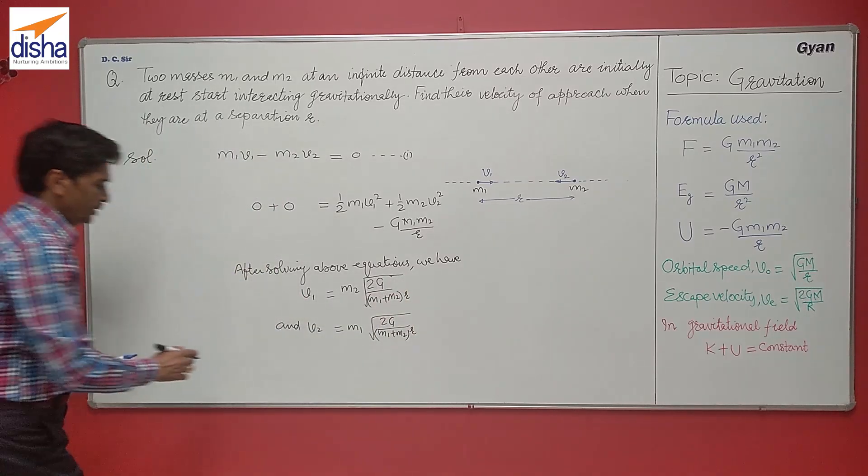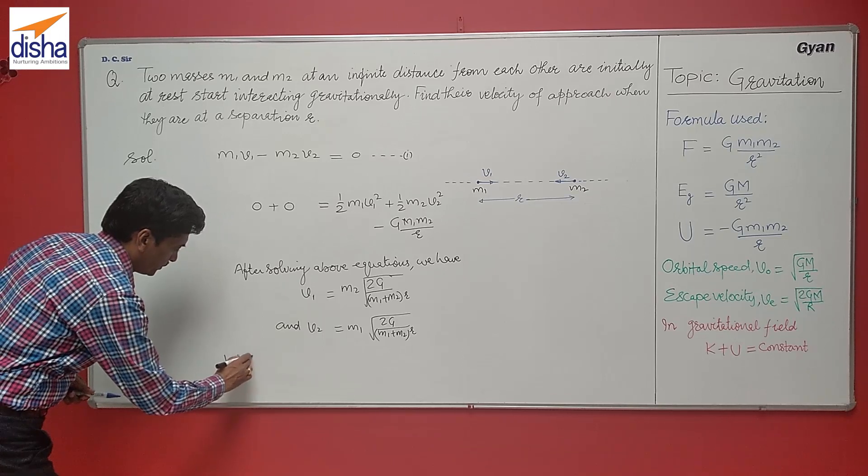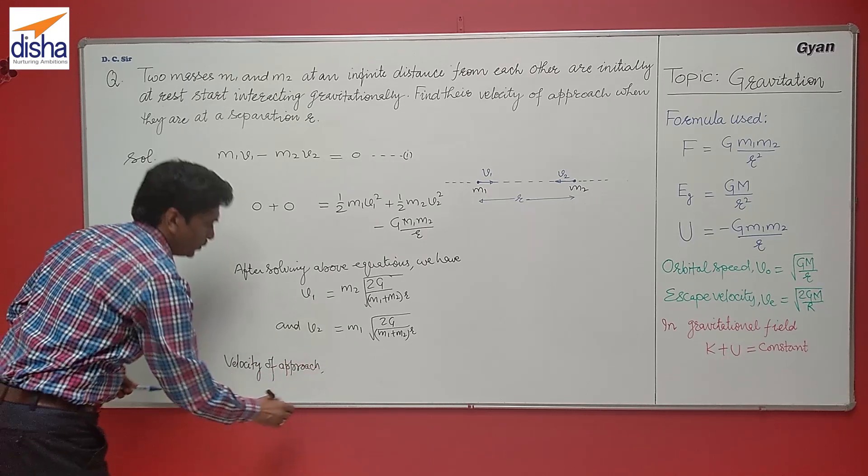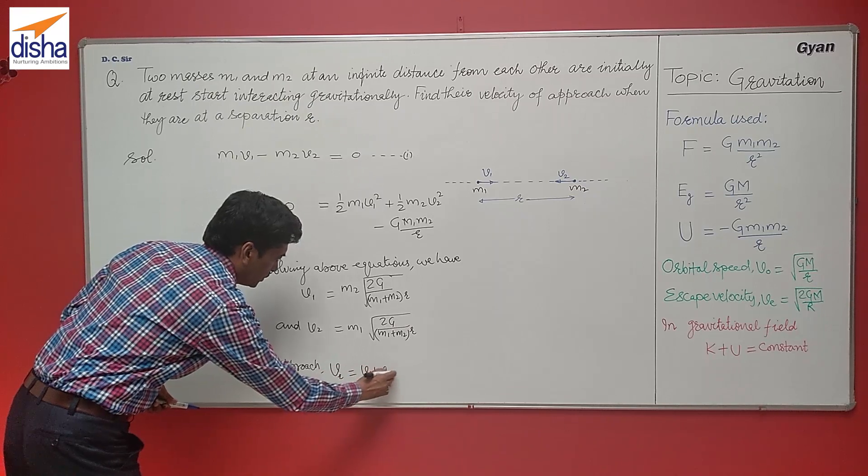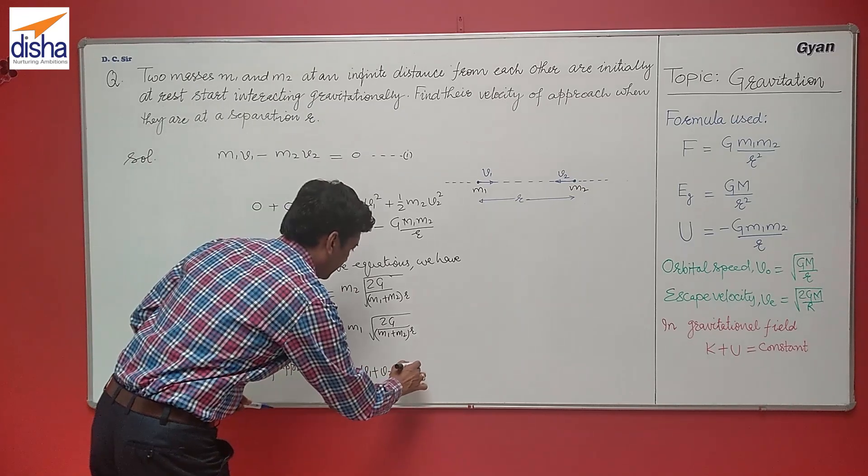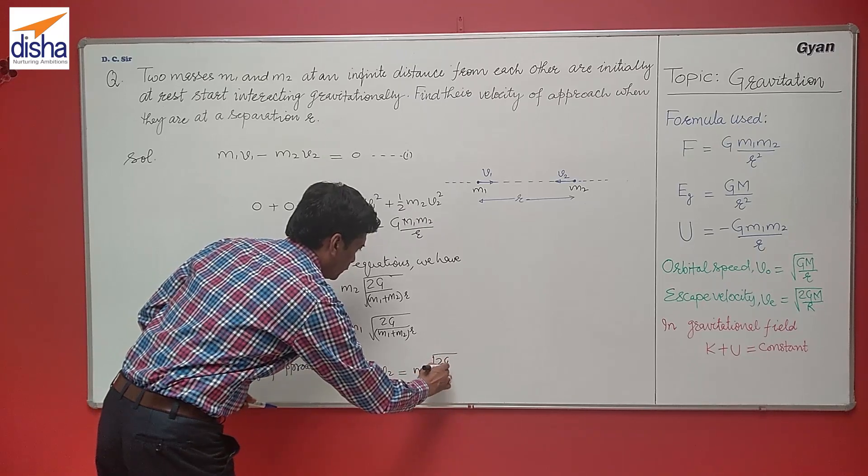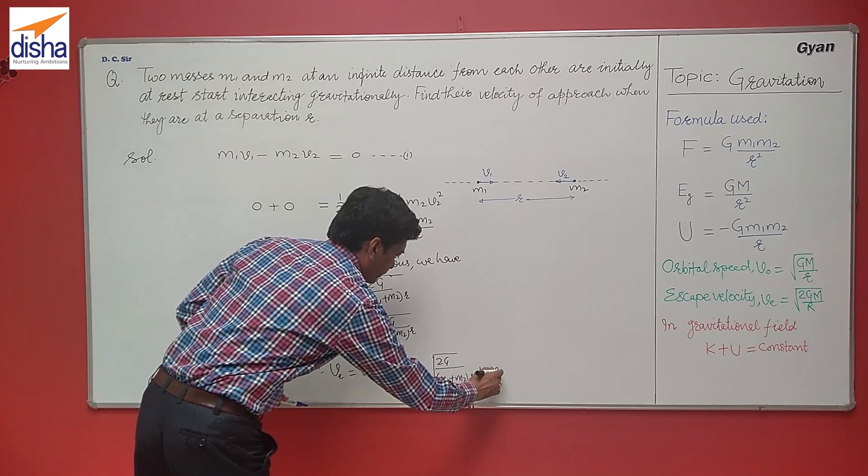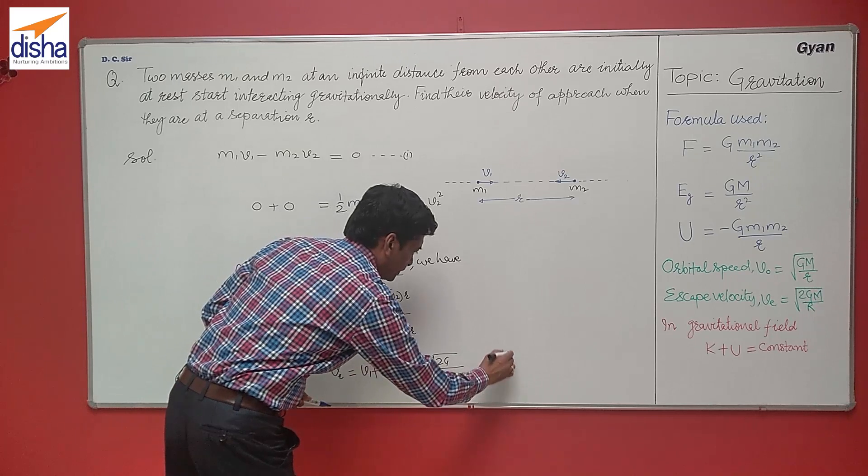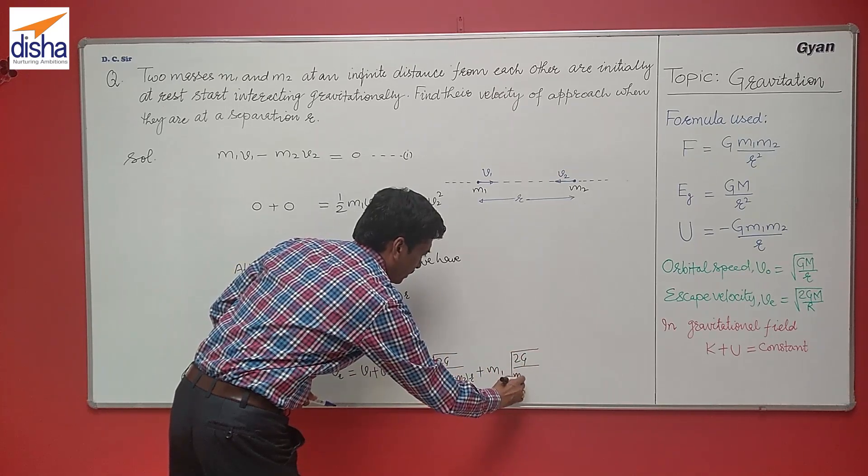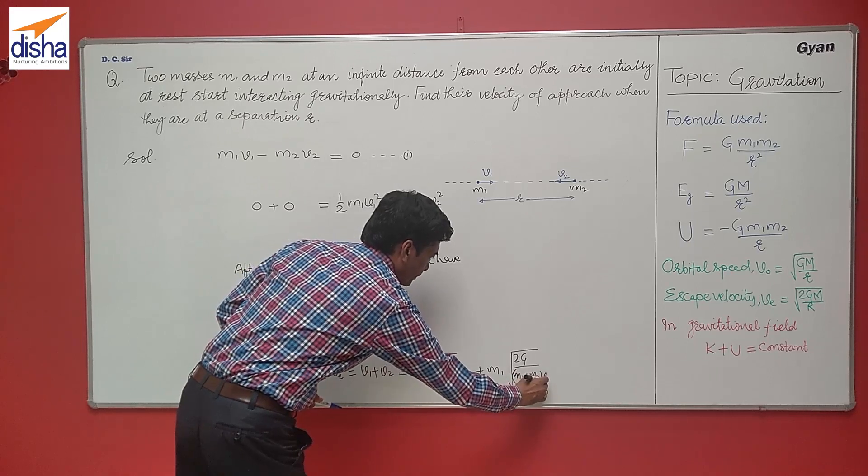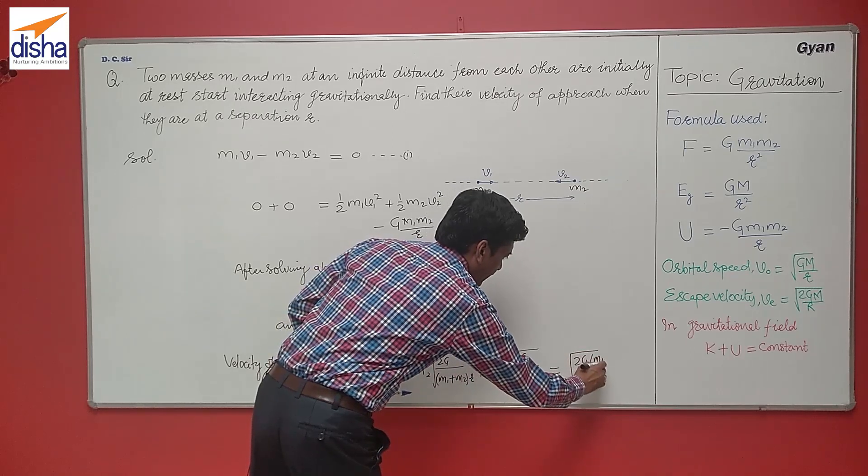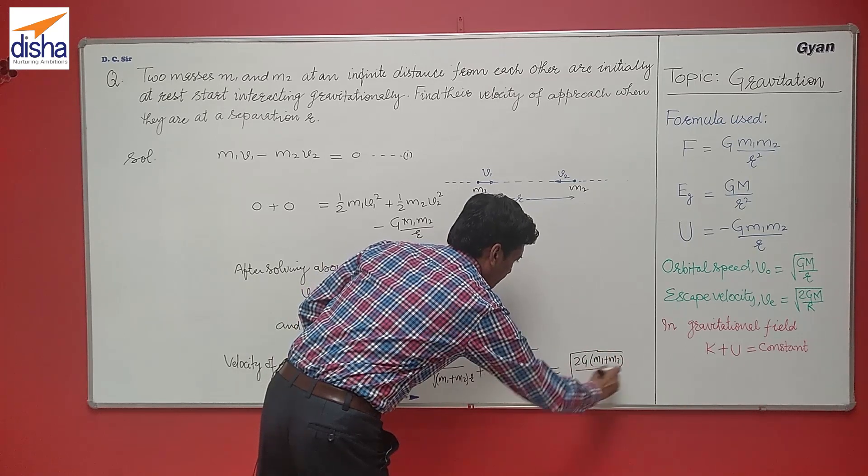Now the velocity of approach, Vr, is equal to V1 plus V2. So on solving these equations, we have M2 under root 2G upon M1 plus M2 R plus M1 under root 2G upon M1 plus M2 R. On simplifying, we get under root 2G times M1 plus M2 upon R. Now this problem can also be solved by reduced mass method.